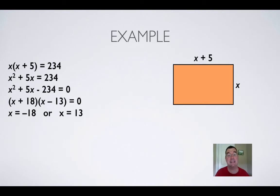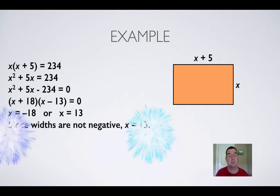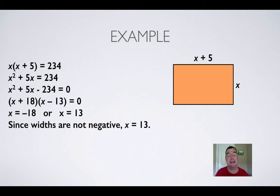So if x plus 18 is zero, then x is negative 18. And if x minus 13 is zero, then x is 13. Now since I can't have a negative width, then negative 18 is out. So the only solution that I can deal with is 13. x is equal to 13.